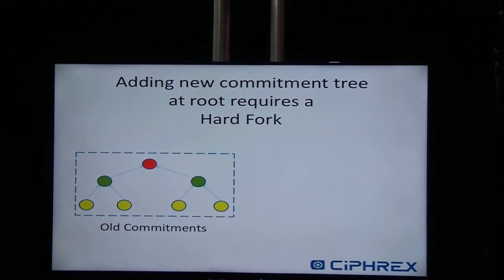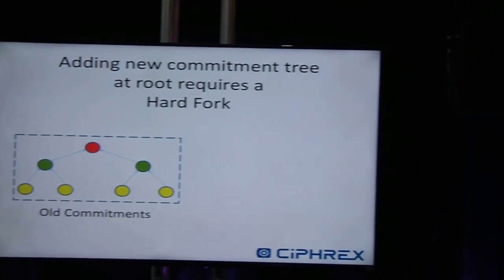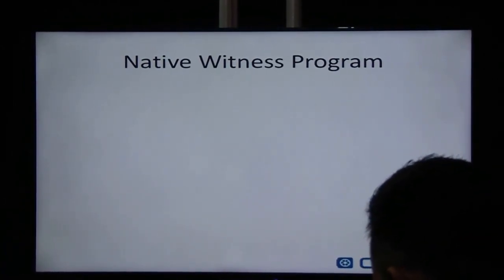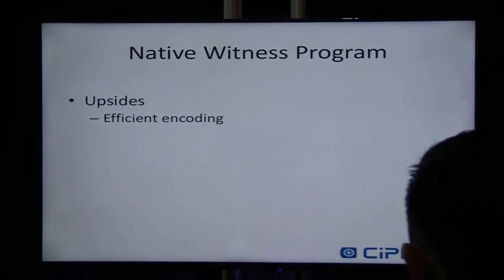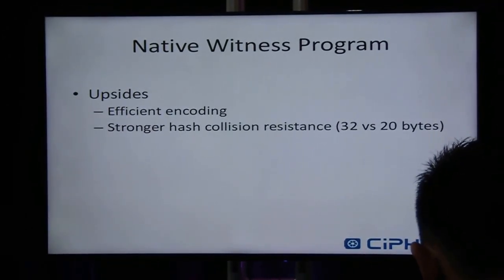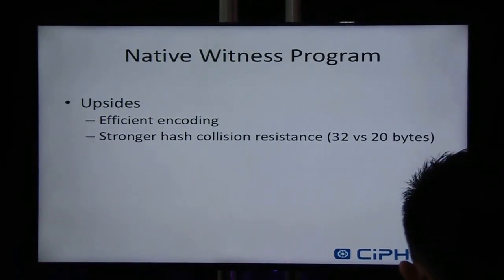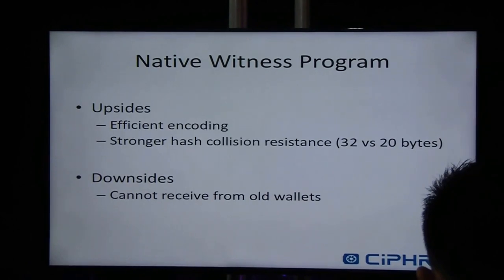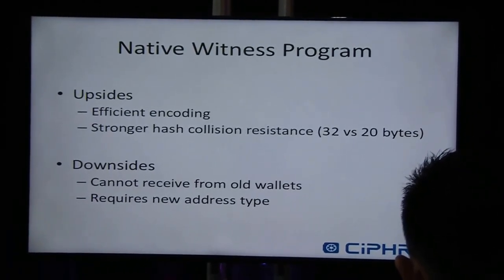If we wanted to add a new commitment tree at the root, it would require a hard fork. And if we ever do a hard fork in Bitcoin, one of my pet things I'd really like to do is to extend the commitment structure at a very basic level to have a nonce where you can just add new trees into it. Unfortunately, that's not the way Bitcoin works right now, so new commitments with a new root would require a hard fork. Native witness programs have some upsides — they're more efficient in encoding and have stronger hash collision resistance, using 32-byte hashes instead of the 20-byte hashes used by P2SH addresses — but the downside is that they cannot receive coins from old wallets and require a new address type. Backwards compatibility is a problem: for new wallets sending bitcoins to each other it's fine, and this is the recommended way to do it, but we wanted to ensure backwards compatibility with old wallets.